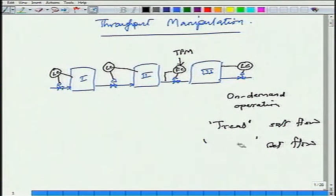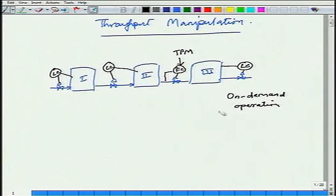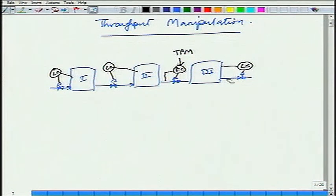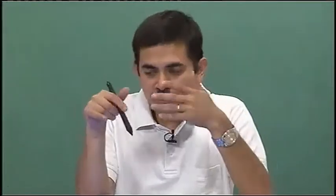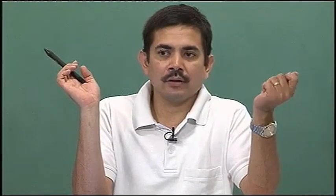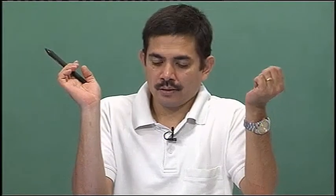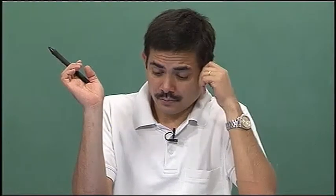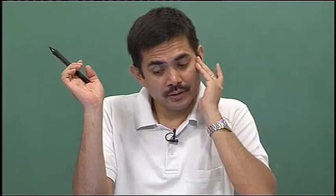The point is there are innumerable options even for this simple process. The throughput manipulator can be located in four different locations, and each one of these control systems would work — it will provide you effective inventory regulation. So where should we put the throughput manipulator? That is the question.